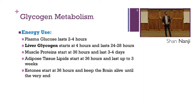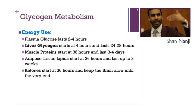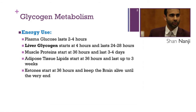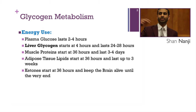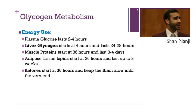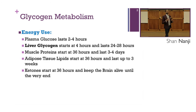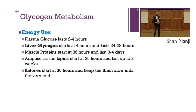Liver glycogen starts at four hours and lasts 24 to 28 hours. Muscle protein starts at 36 hours and lasts three to four days. Adipose tissue lipids start at 36 hours and last up to three weeks. Ketones start at 36 hours and keep the brain alive until the very end.